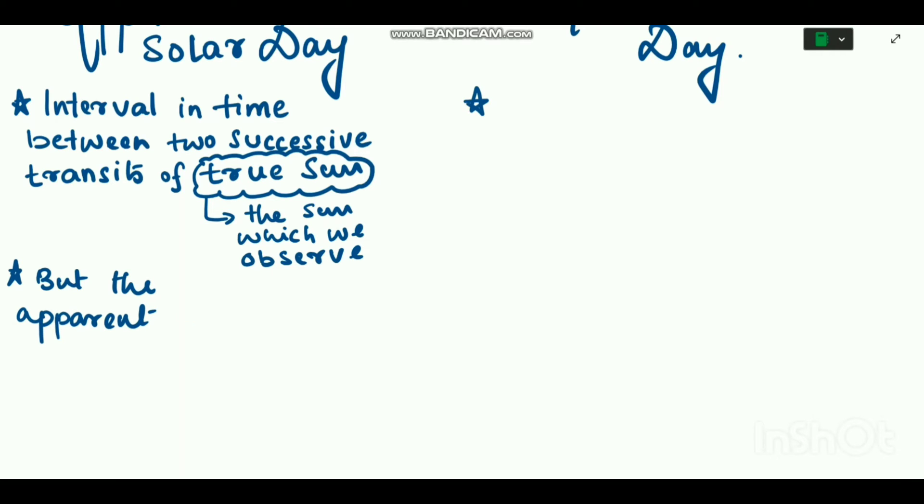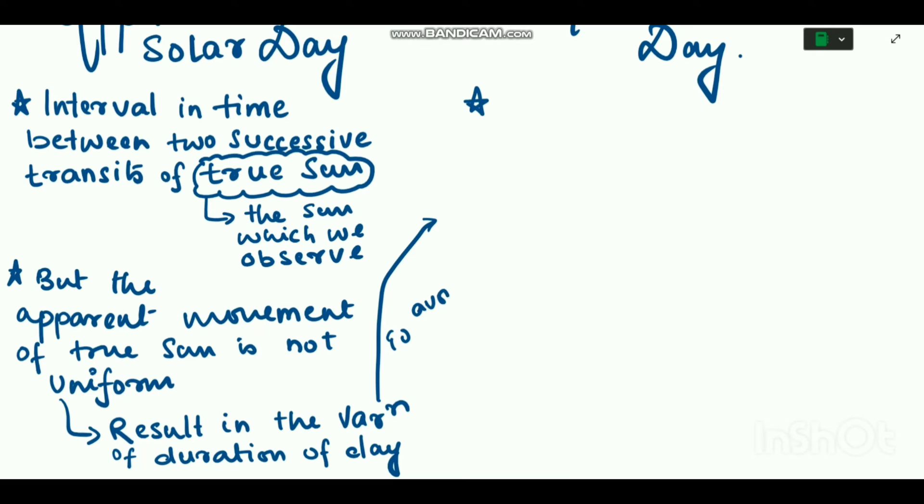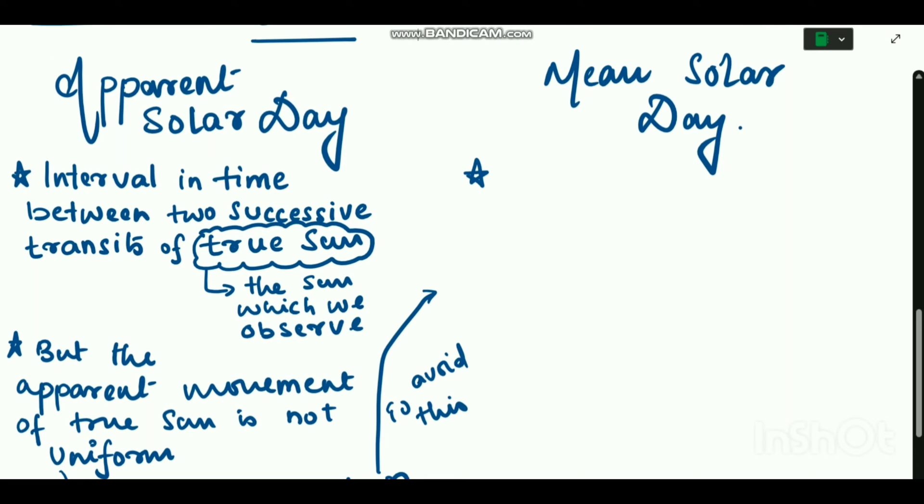And due to this there is variation in the duration of day if we select this true Sun as our reference for time. So to avoid this we use mean Sun, which will be discussed in the mean solar day.